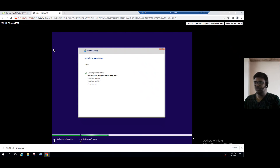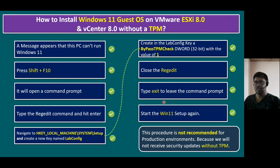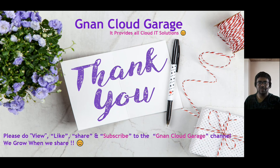Let's go back to the lab system — installation may take a while. Once the installation is complete, we know how to do the further steps: install guest drivers, VMware Tools, enable the computer, change the computer name, assign the IP address, and install project-specific applications. Thank you. If you're watching this video for the first time, please like, share, and subscribe to the Nant Lord Garage channel. If you're already subscribed, I appreciate all your support.